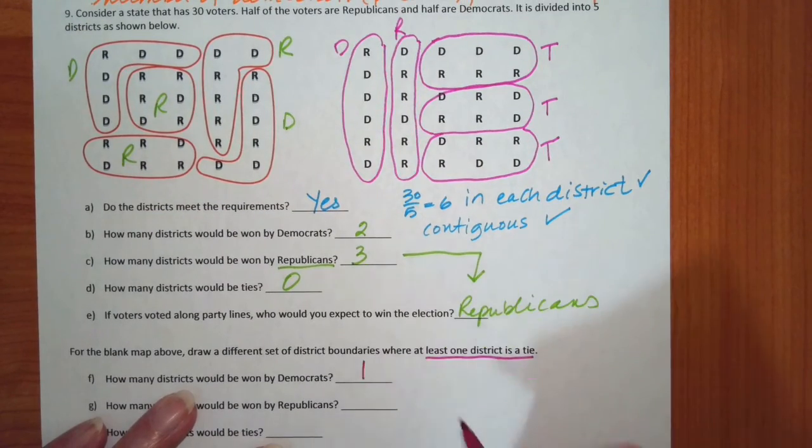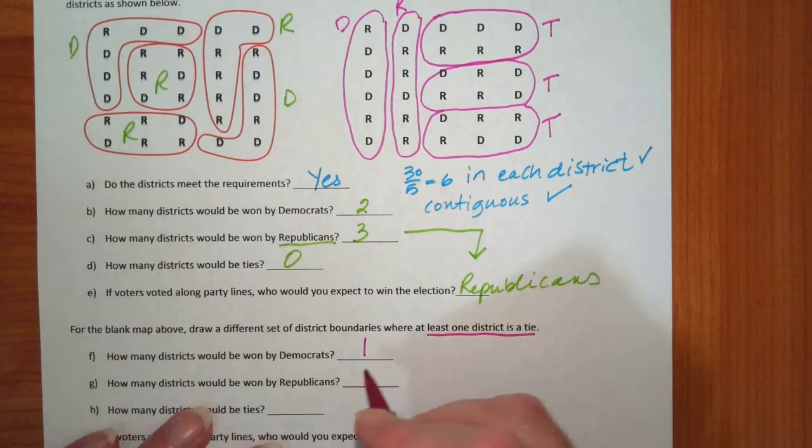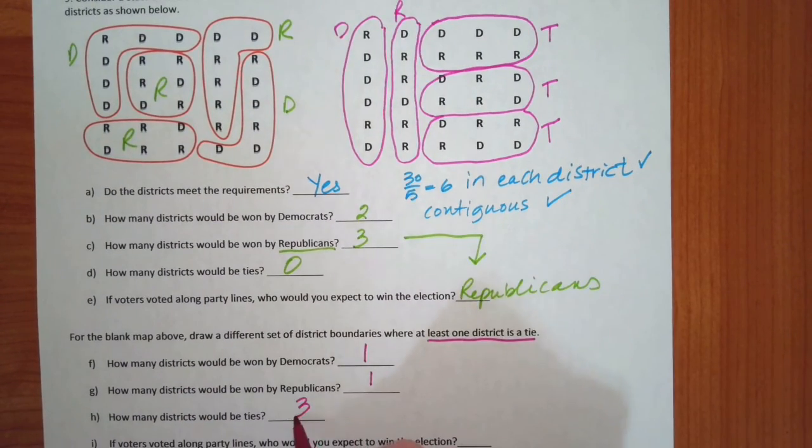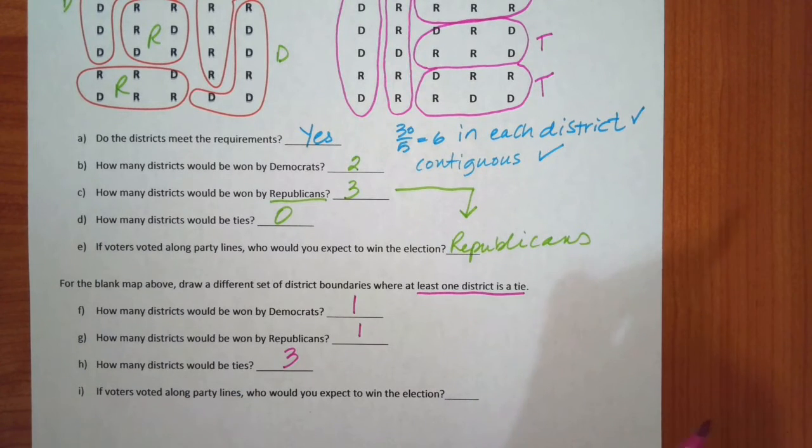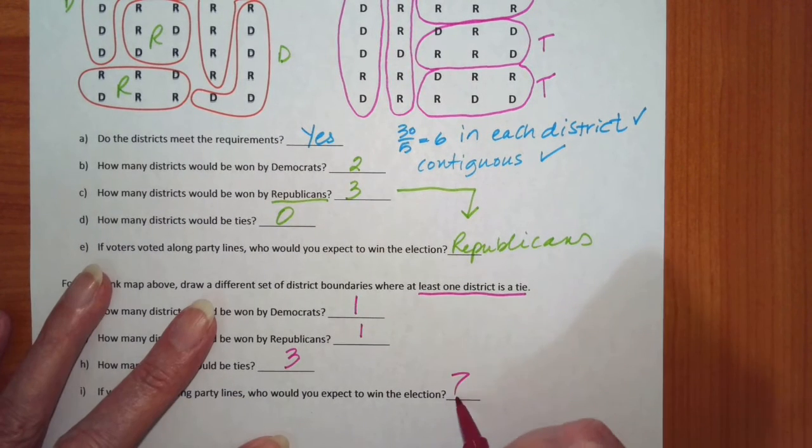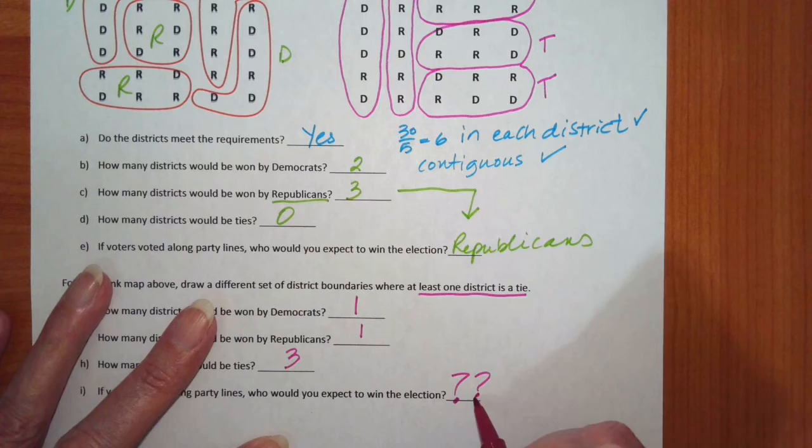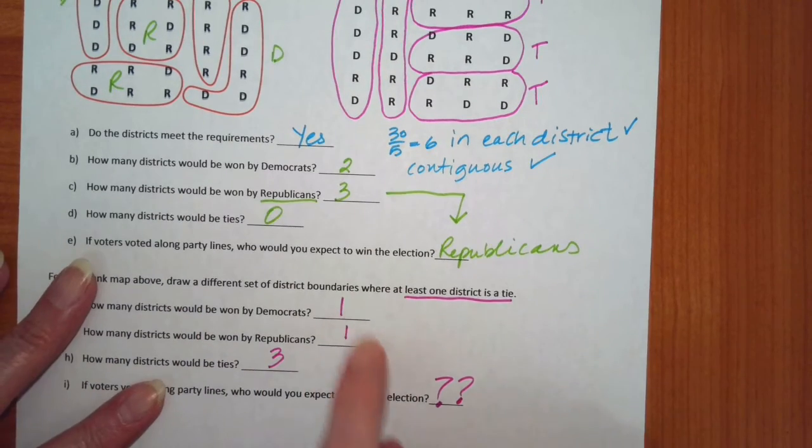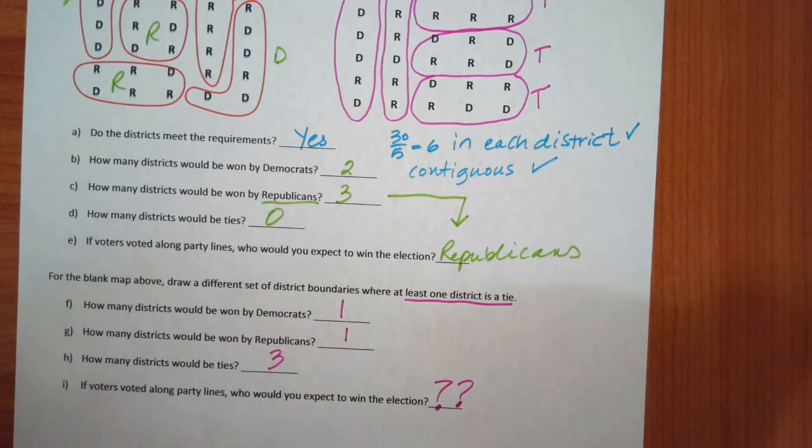So let's answer the questions. How many are won by Democrats? One. How many are won by Republicans? One. How many are ties? Three. So if you vote along party lines, who do you expect to win the election? I have no idea. Yeah, they're actually split up pretty evenly since these are ties and then one district went to each of the political parties on the other ones.